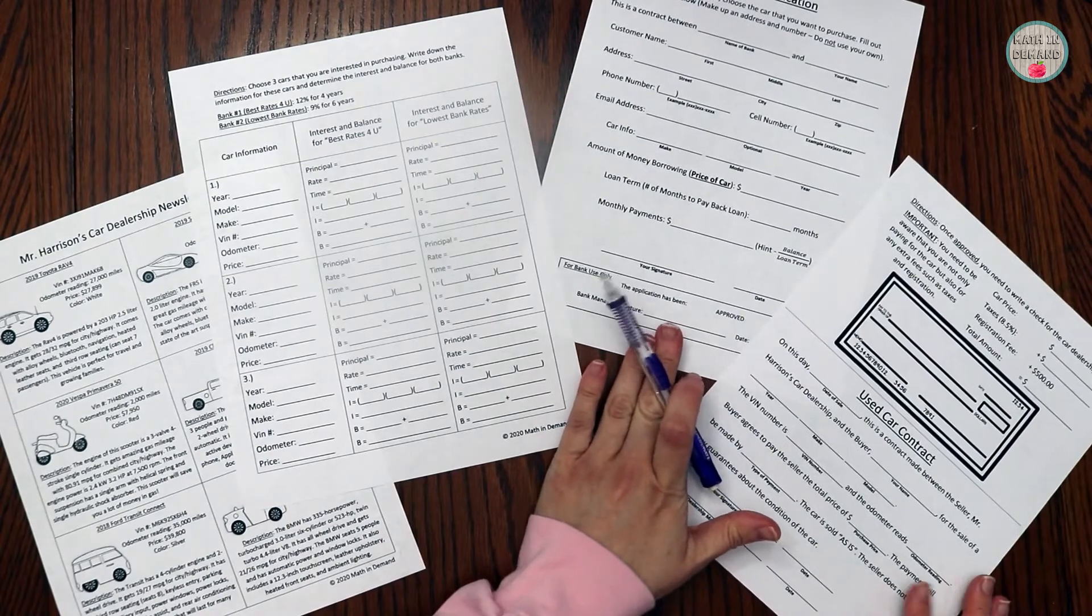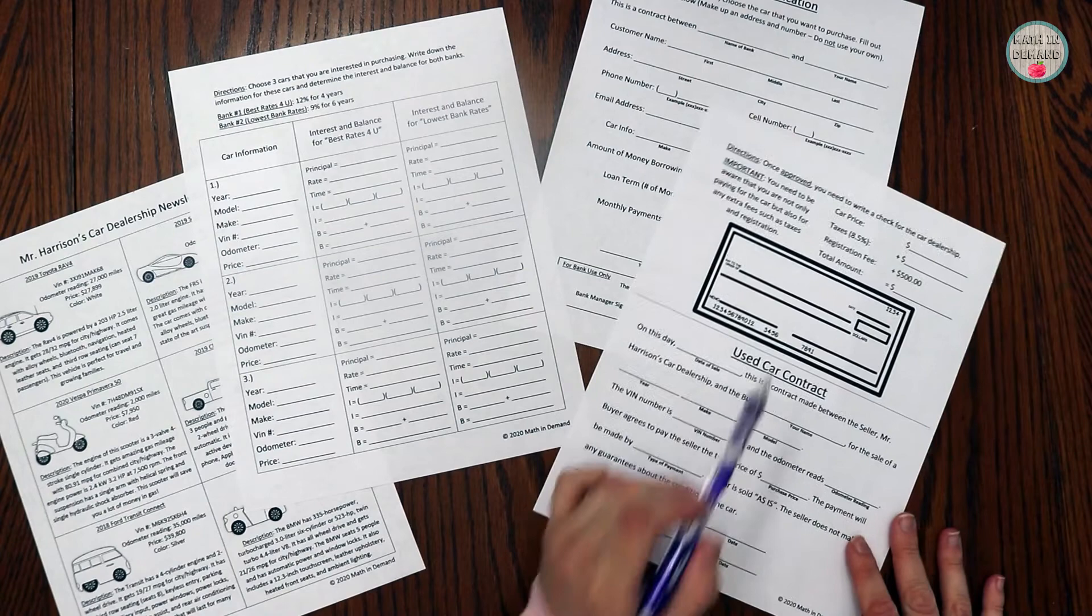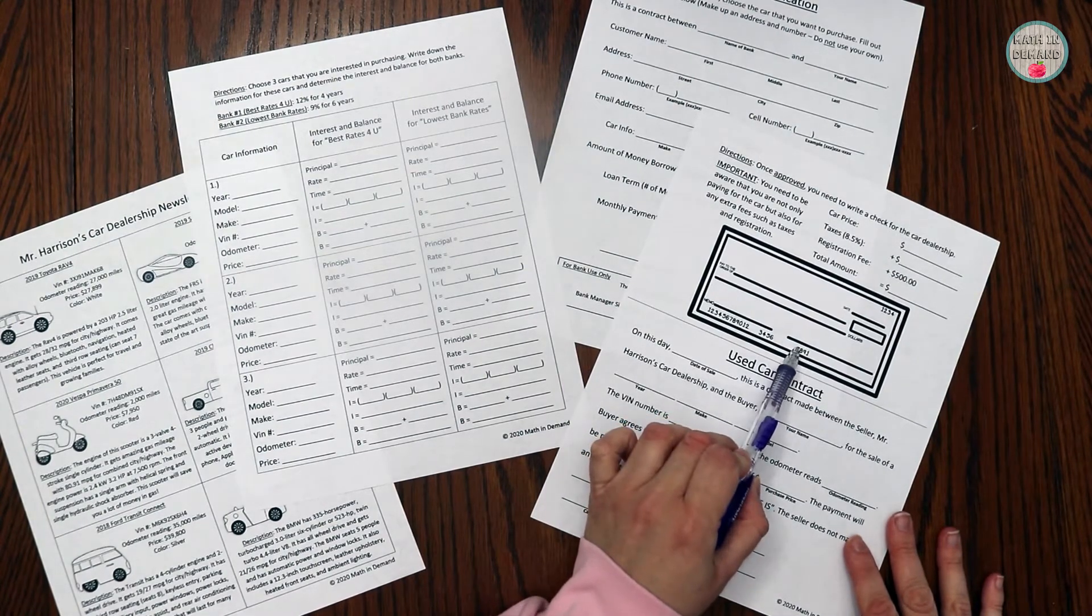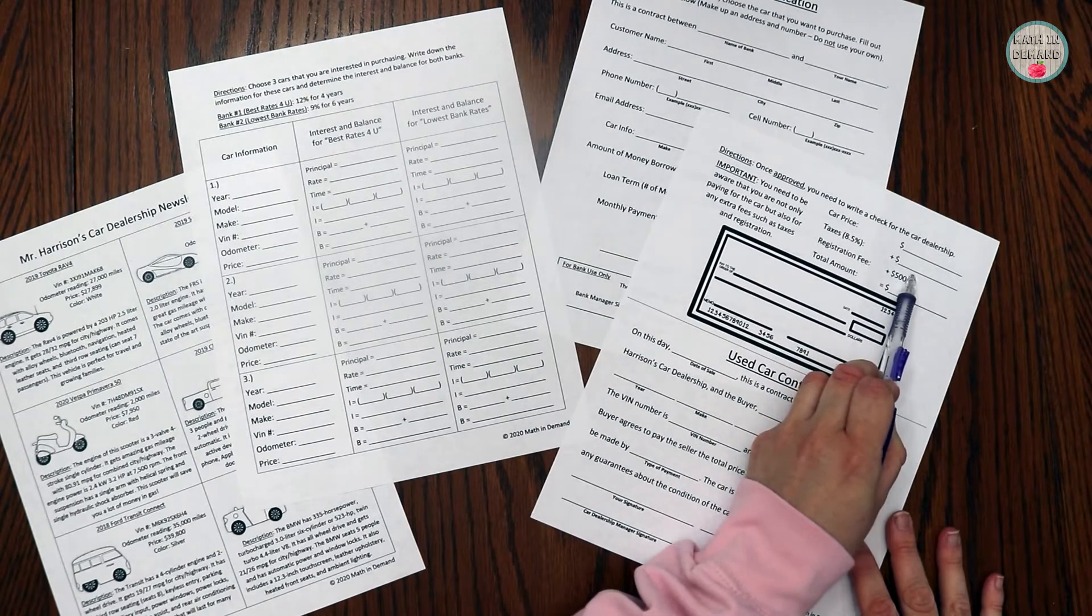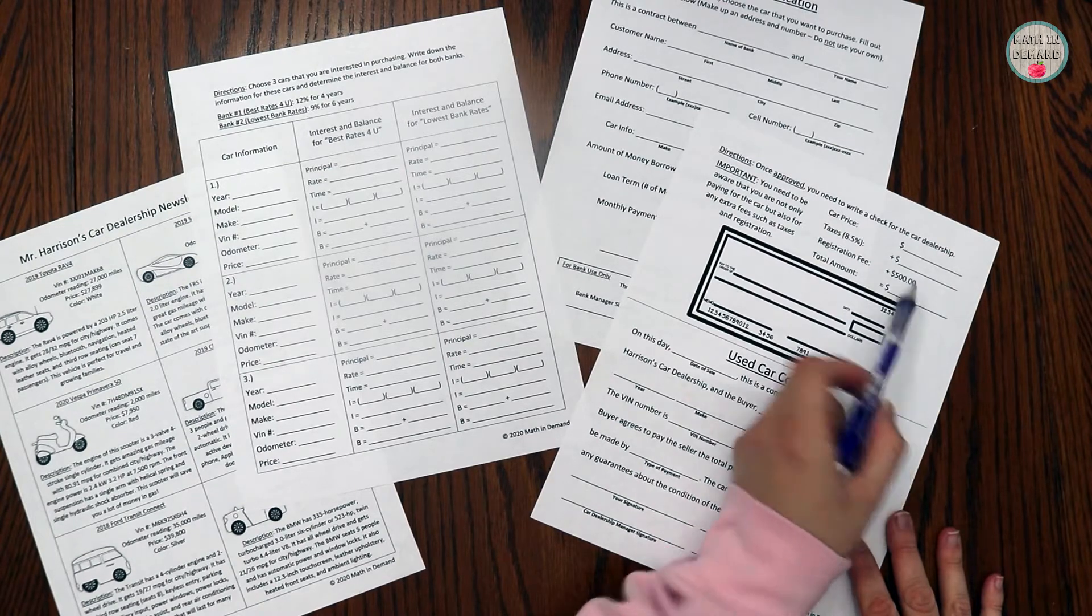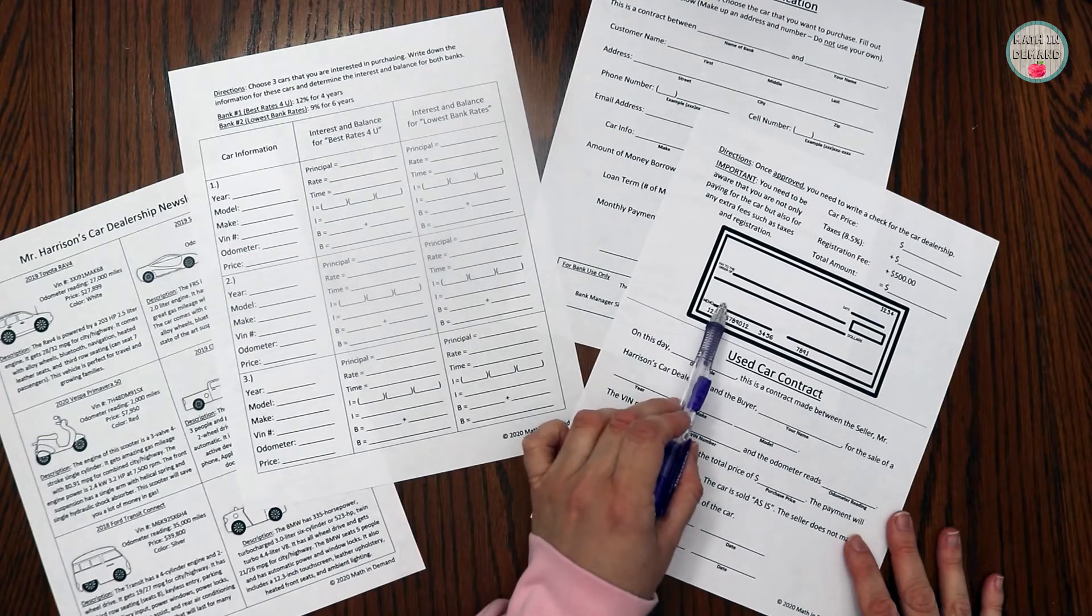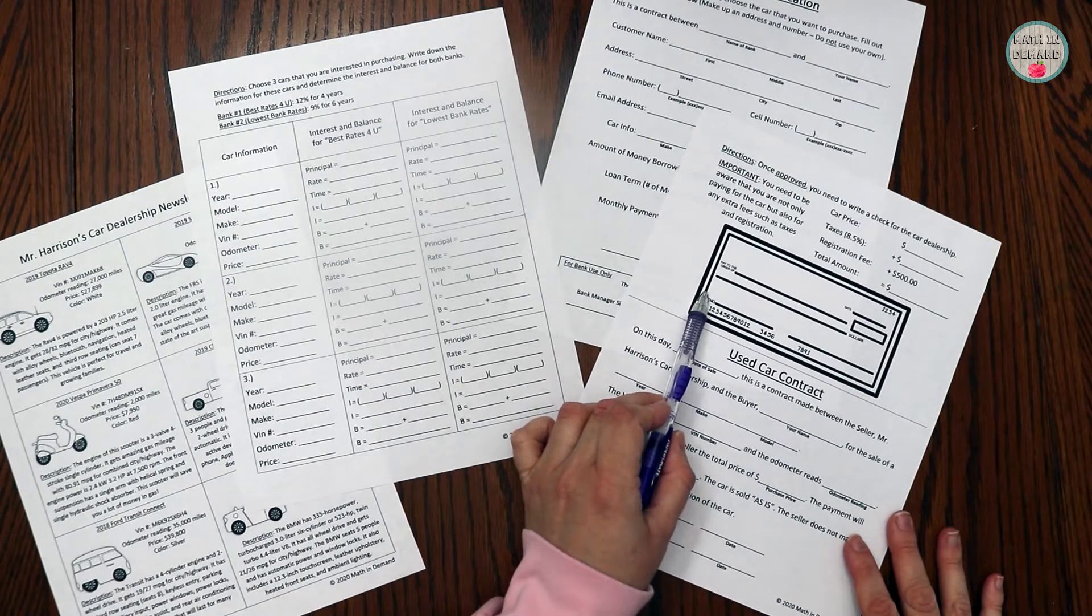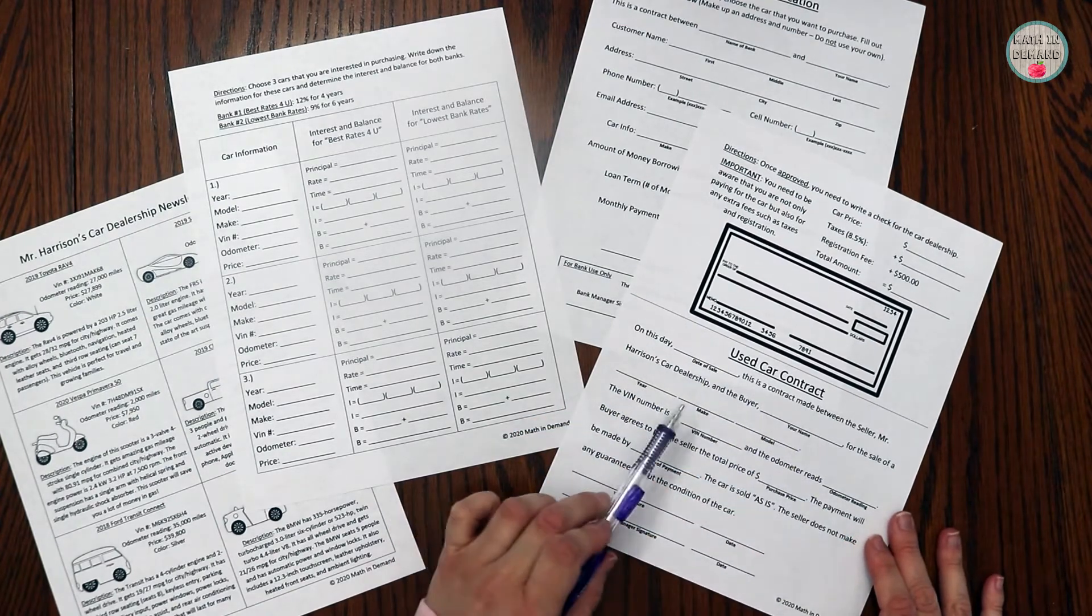After the student has been approved for their loan, then the student is going to determine how much they need to pay the car dealership for the vehicle. So they will have the car price, taxes, there's a registration fee, and then they'll determine the total amount. They will fill out the check and then they will go back to the car dealership, which will be the teacher, and they will fill out the used car contract.